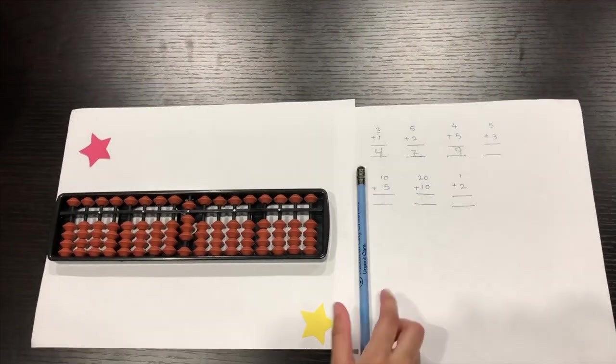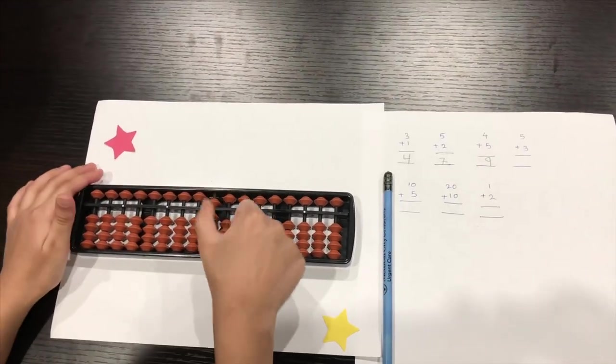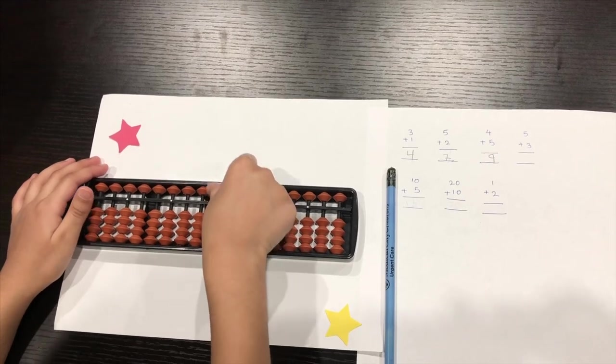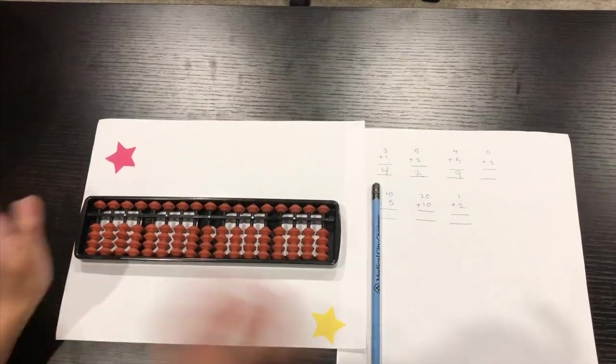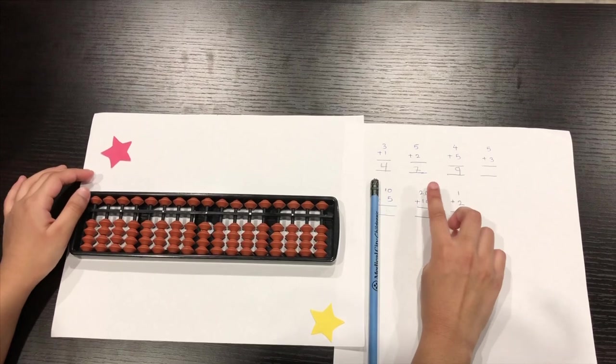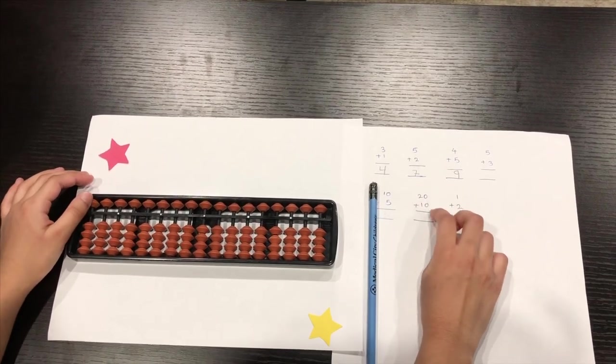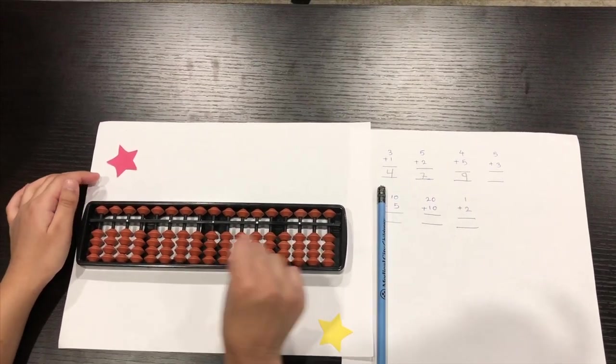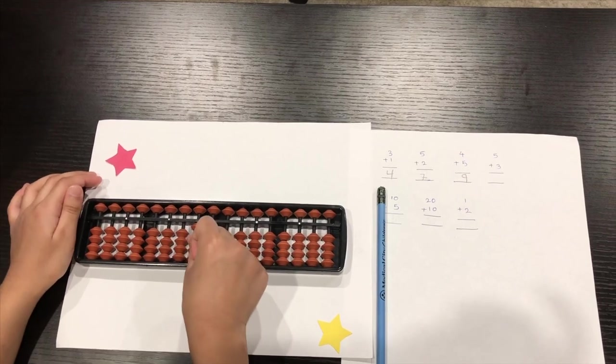And we should, for our abacus, we always need to do it with the thumb. So, we're going to do the tens problems. So this problem says twenty plus ten, right? For twenty plus ten, one, ten.